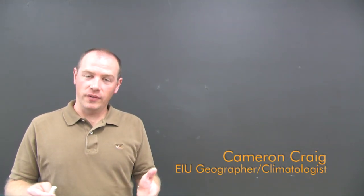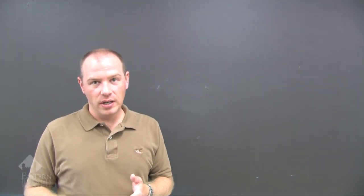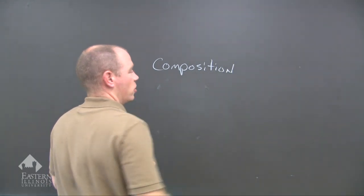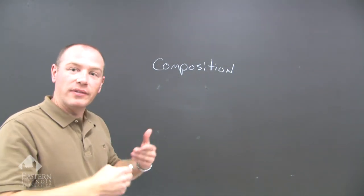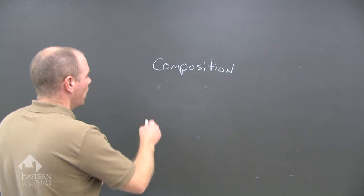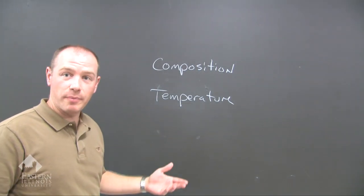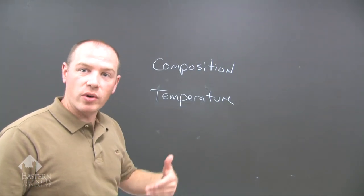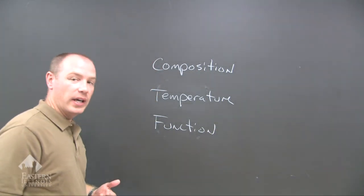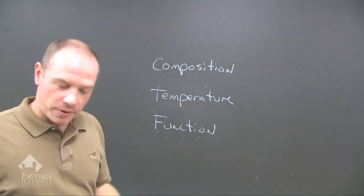In this video lecture, we're going to look at the structure of the atmosphere. The atmosphere can be divided into three different categories. The first category would be composition, meaning how it is made up. Then we have temperature — we can categorize the atmosphere according to its temperature, whether increasing or decreasing. And then the final one would be function: how does the particular shell in that category function, and what are its purposes?